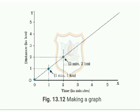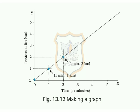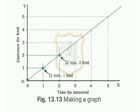Similarly, mark on the graph paper the points corresponding to different sets of values. Figure 13.12 shows the set of points on the graph corresponding to positions of the car at various times. Join all the points on the graph as shown in figure 13.13 — it is a straight line. This is the distance-time graph for the motion of the car.